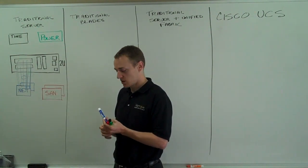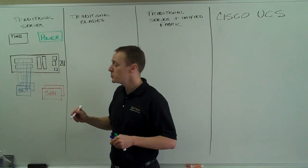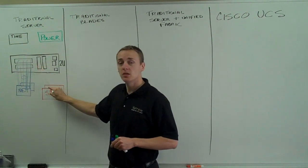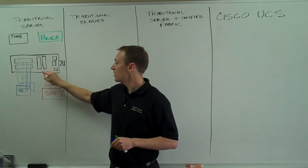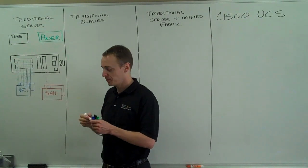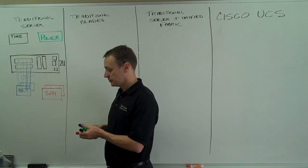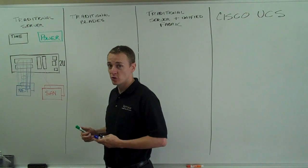I'm also going to take two single port fiber channel HBAs, connect one to each storage fabric. It's going to be about 4GB of throughput for storage. It's pretty standard. There's 8GB fiber channel HBAs out now. You could use those as well.